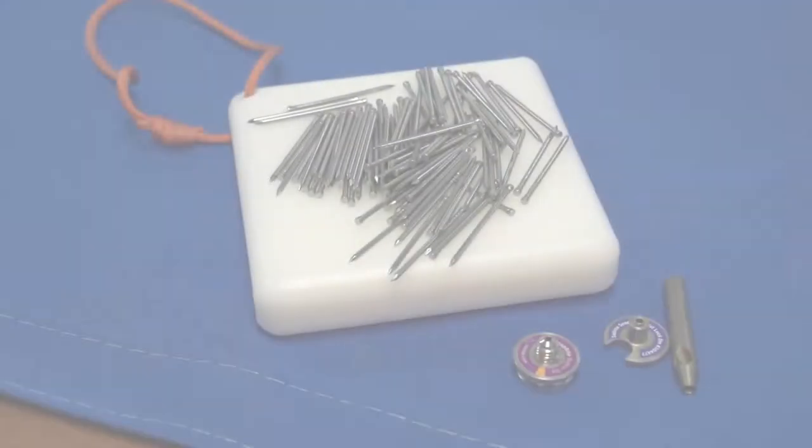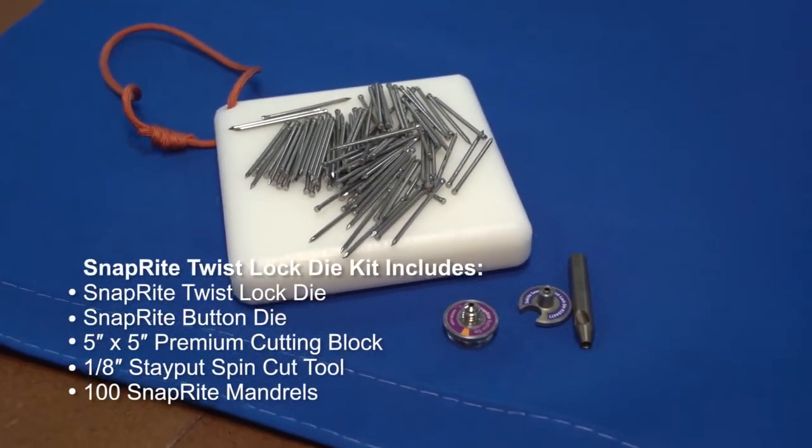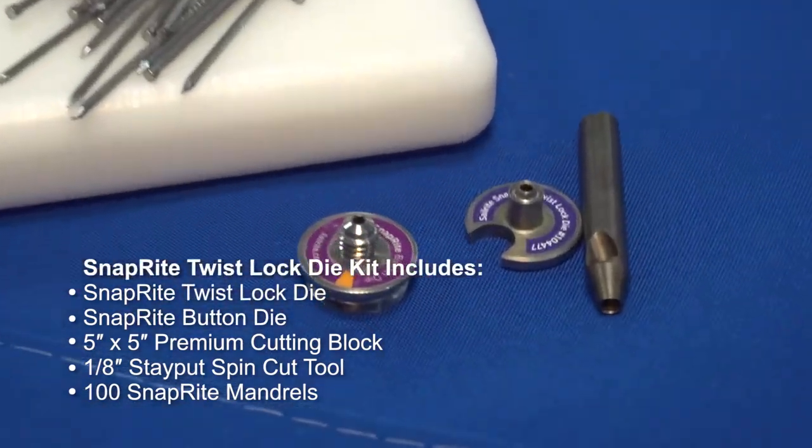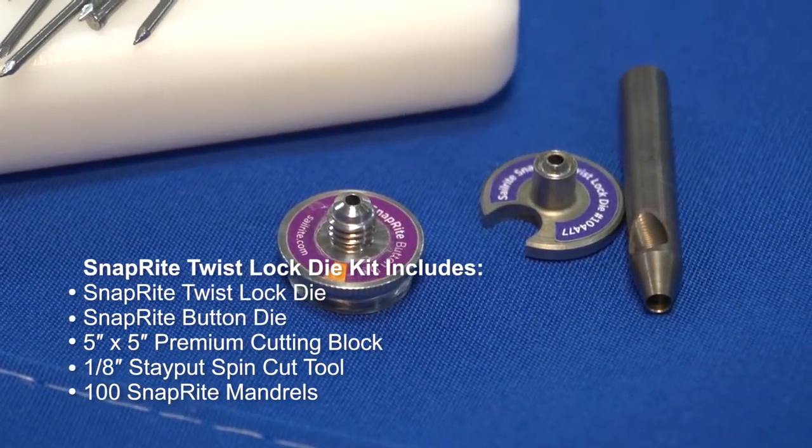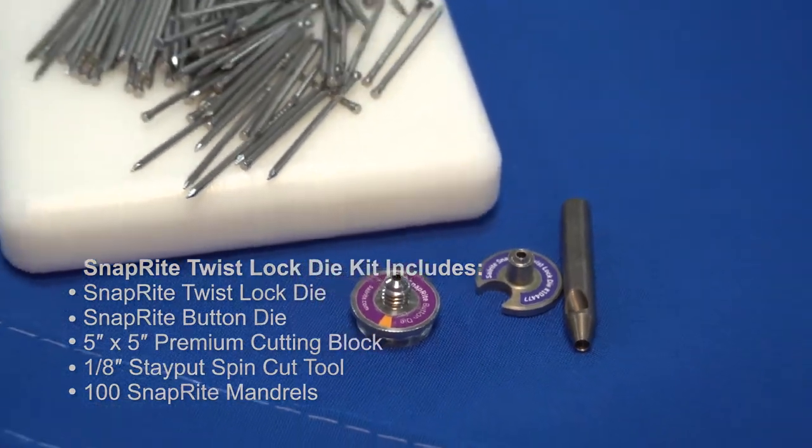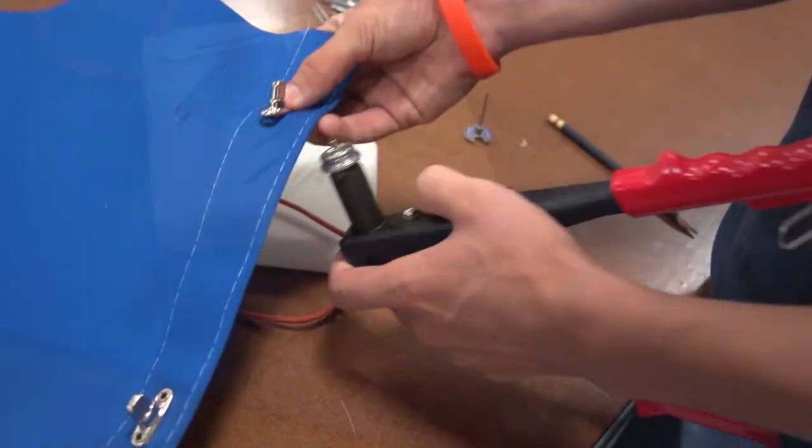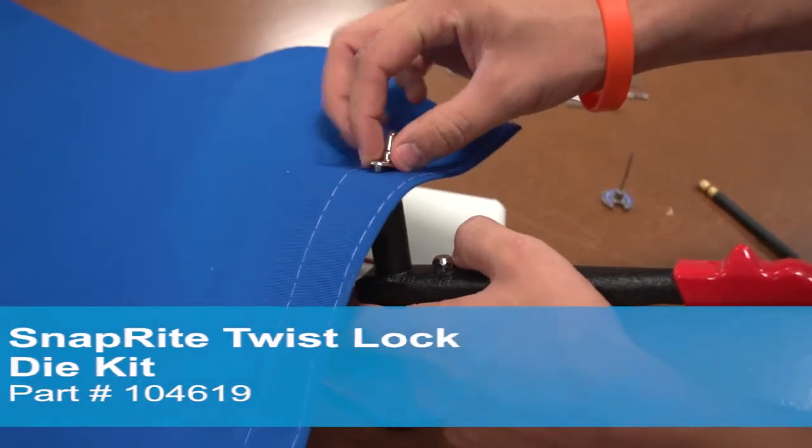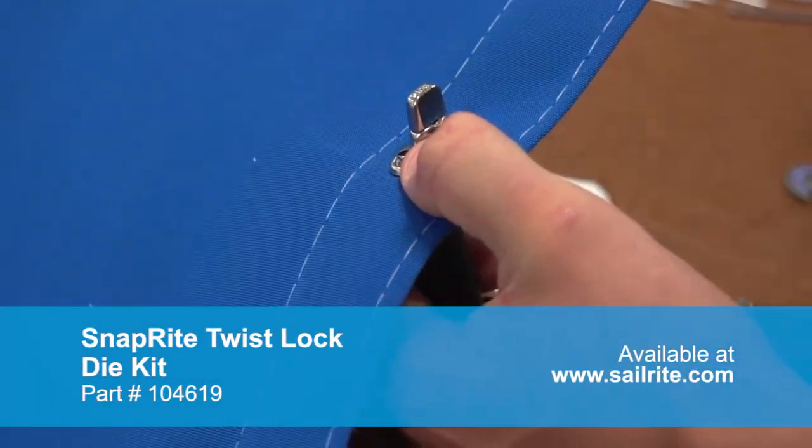This kit includes a SnapRite twist lock die, the SnapRite button die, the 5x5 premium cutting block, the eighth inch stay put spin cut tool and 100 SnapRite mandrels. The SnapRite twist lock die kit is exclusively sold at Sailrite.